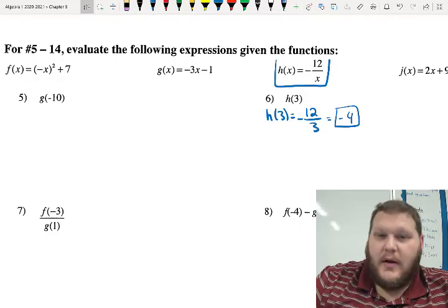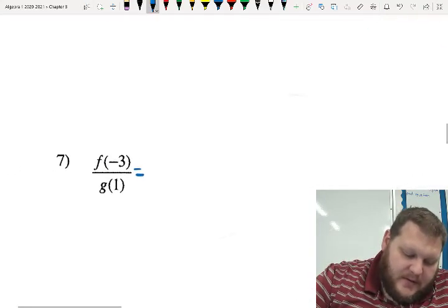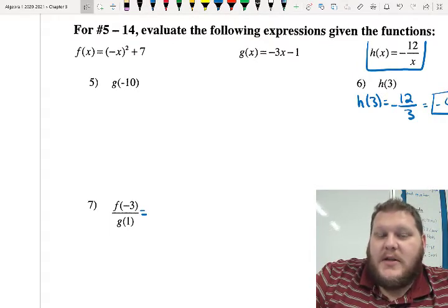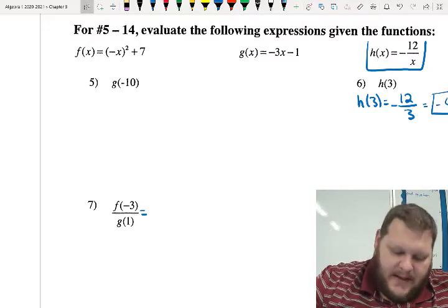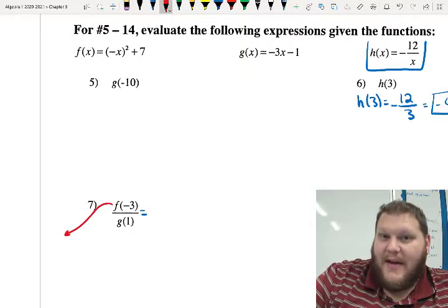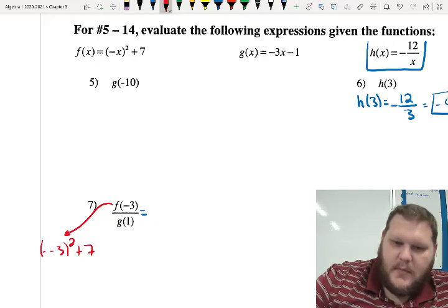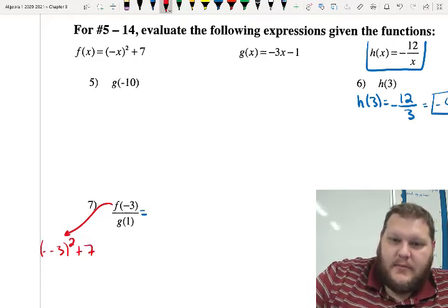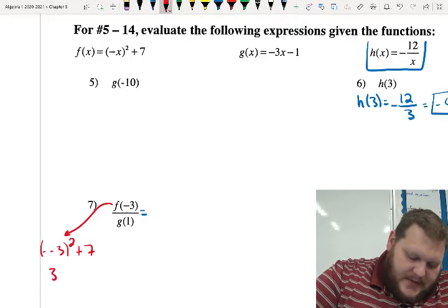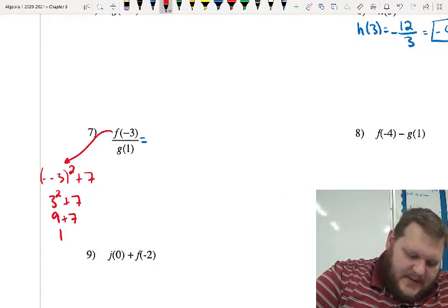If we start getting into some where I'm combining them together, now this is a little more complicated. Here, f of negative 3 divided by g of 1. What I would suggest doing would be to just evaluate each of those individually first and then combine them together. So, here, I'm going to use red for f. So, over here, if I plug negative 3 into my f of x equation, that is negative negative 3 squared plus 7. Because, again, it's negative x squared plus 7. Here, my parenthesis is around my negative x. So, I'm going to change my sign first and then square. So, that is positive 3 squared plus 7. So, 9 plus 7. So, we end up with positive 16 up top.